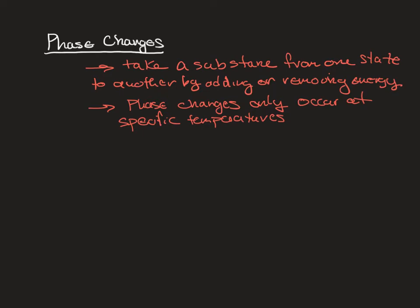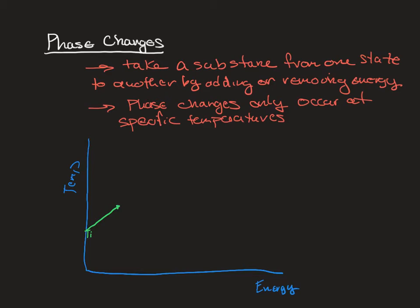We're going to look at this in graph form. We're going to put temperature on the y-axis and energy on the x-axis. We're going to start in the solid phase — you don't necessarily have to start there, but you can use this entire graph and put your initial and final points where they need to be. Starting at some initial temperature, as you add energy, the temperature increases up until you hit the melting point. This region is the solid phase, and we use Q = mcΔT to find the heat needed for that temperature change.